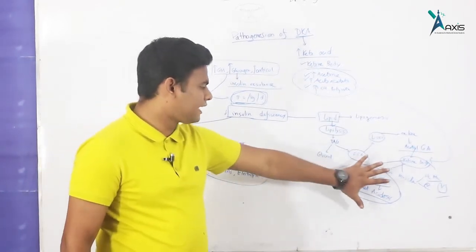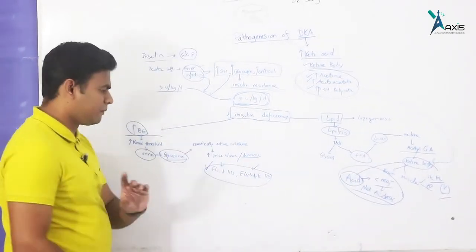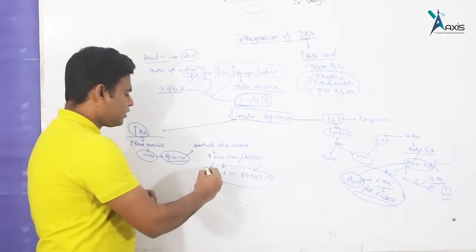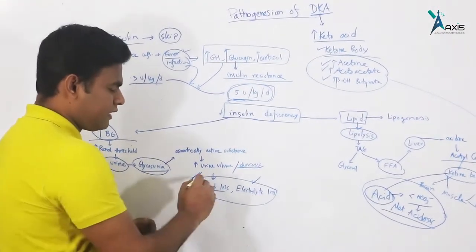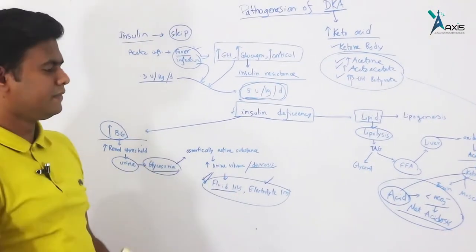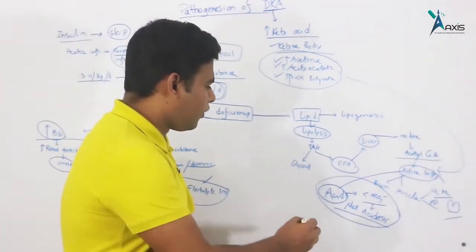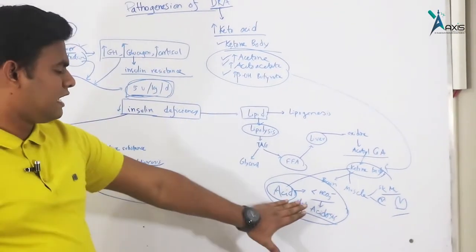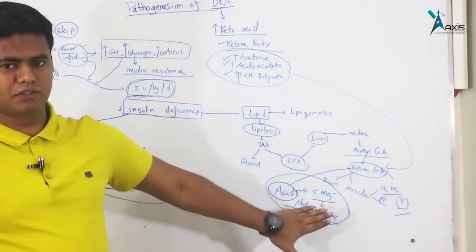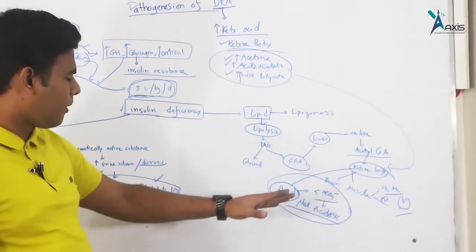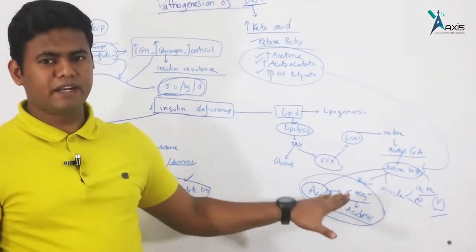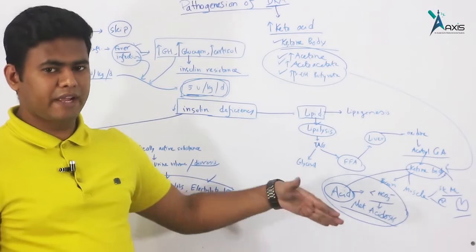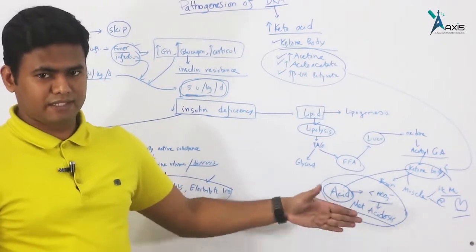This is part of the problem. The patient experiences fluid loss and electrolyte loss. This results in metabolic acidosis — specifically high anion gap metabolic acidosis. We will discuss the anion gap further in a dedicated lecture.